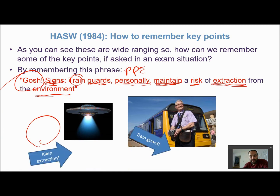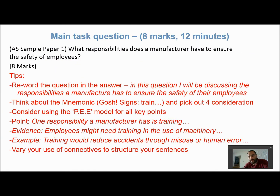Have a go at this question. It's an eight-marker, so allow about 12 minutes — roughly a minute and a half per mark, which is about the right pace for the exam. Use the general tips I'd give: reword the question in your answer. So you might begin: 'In this question, I'll be discussing the responsibilities a manufacturer has to ensure the safety of their employees.' Think about the mnemonic and pick out at least four points that are explained, justified, and discussed in detail.